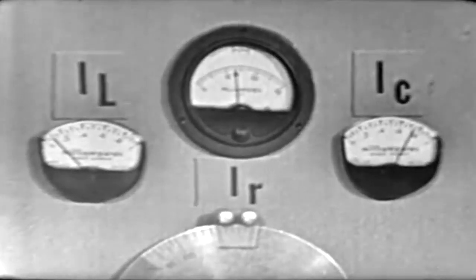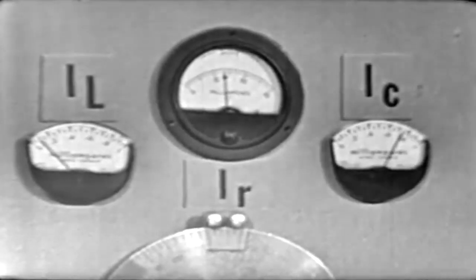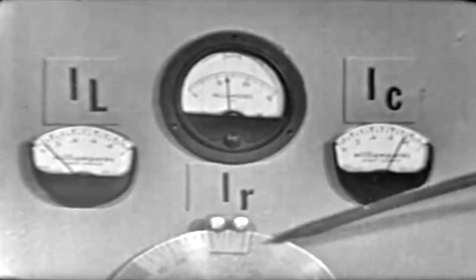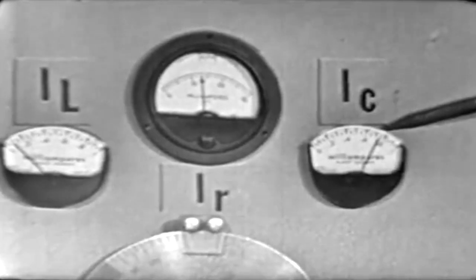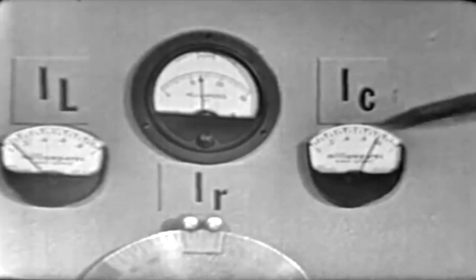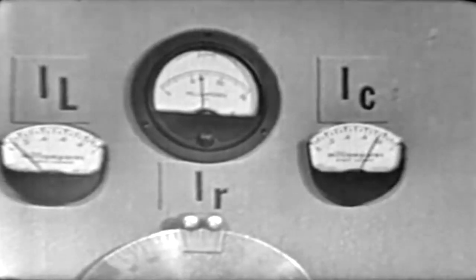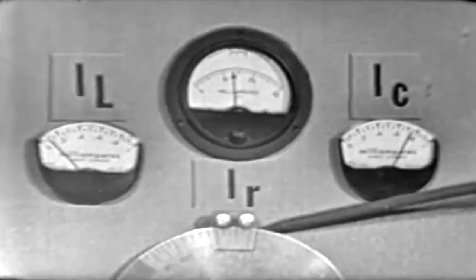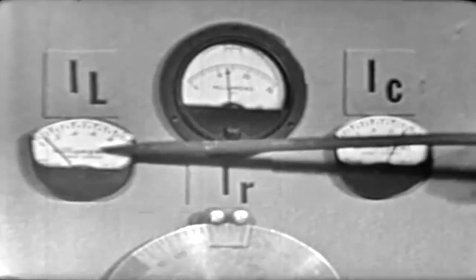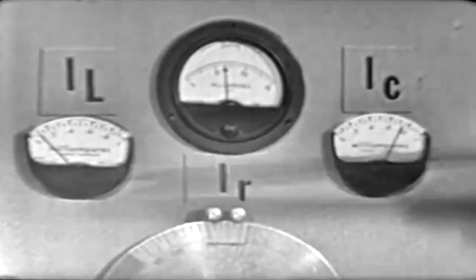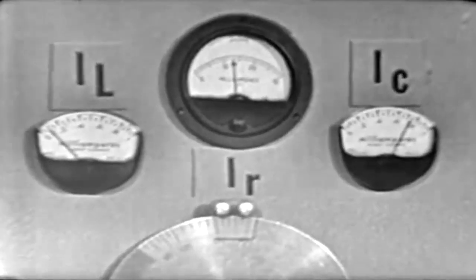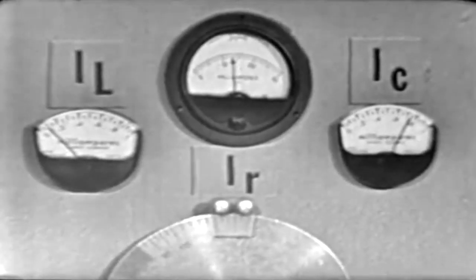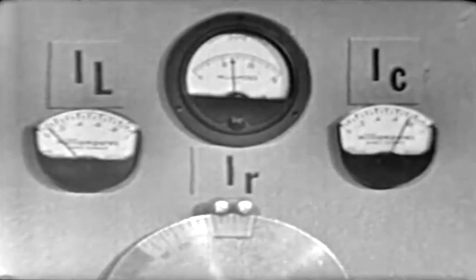Suppose we decrease the frequency applied to our network. What do you suppose is going to happen to IC, IR, and IL? Let's analyze the situation first and determine what's going to happen. We know if we decrease the frequency applied to our network, the capacitive reactance of the capacitor is going to increase. Therefore, IC will have to decrease. Likewise, when we decrease the frequency, we're going to decrease the inductive reactance of the coil, and IL would have to increase. But what about IR? Does frequency have anything to do with R? No, it doesn't. The only thing that's going to change the current through R is the voltage applied to the circuit.